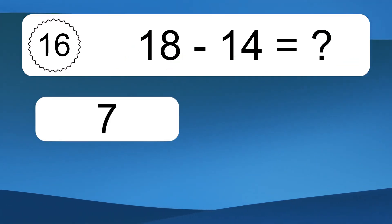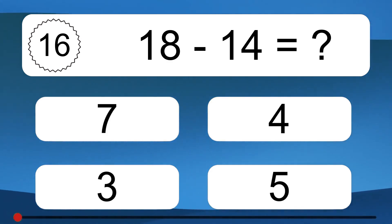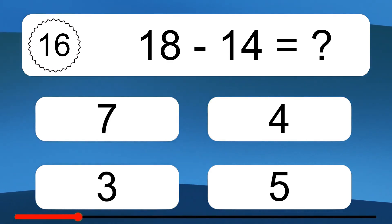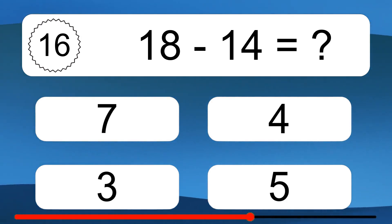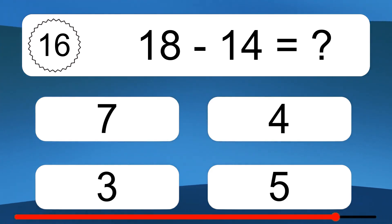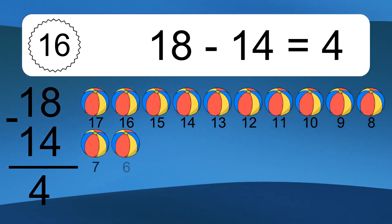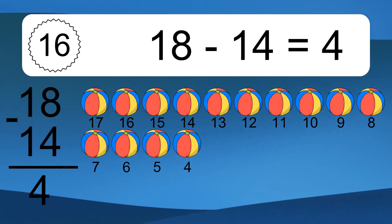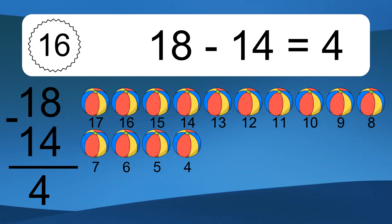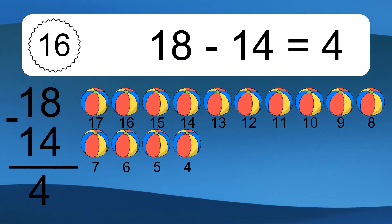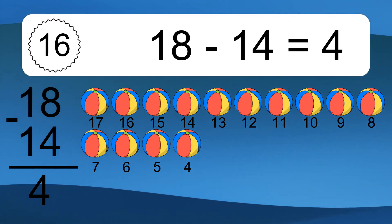18 minus 14 equals what? 18 minus 14 equals 4. Let's count it: 18, 17, 16, 15, 14, 13, 12, 11, 10, 9, 8, 7, 6, 5, 4.